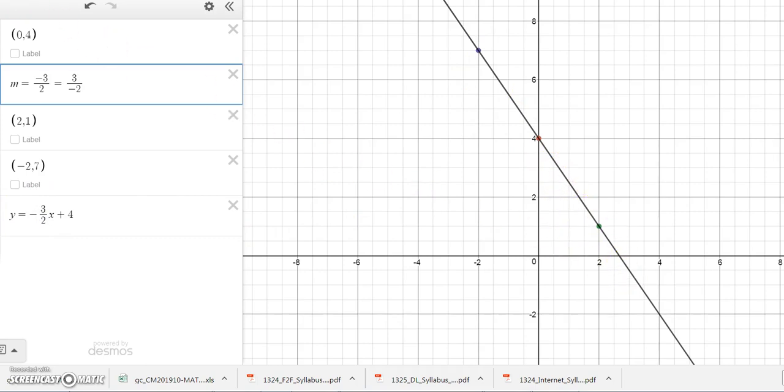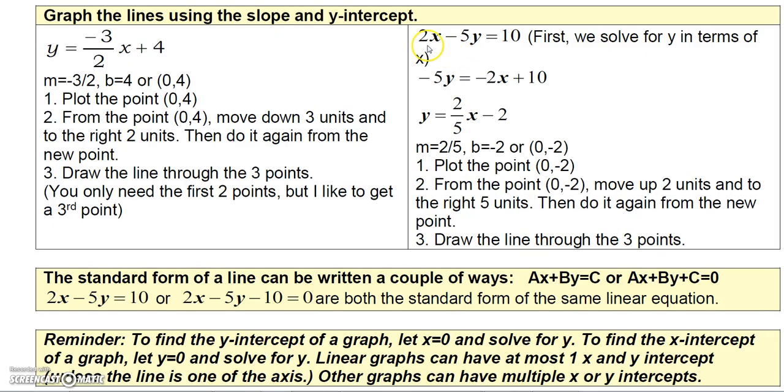If the line is written in this form, 2x - 5y = 10, you can still graph it using the slope and the y-intercept, but what you have to do is you have to solve this equation for y.